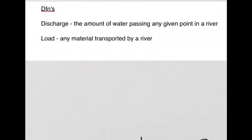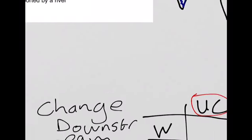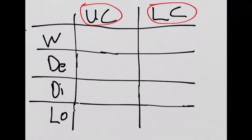We see two new definitions. First one, discharge, is the amount of water passing any given point in a river, and load is any material transported by a river, really the rocks and stones and pebbles that we are concerned with.